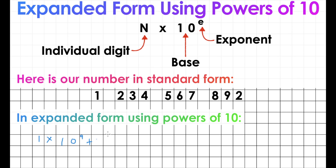To that, we're going to add our next one. 2 is in the hundred millions place, so we're going to write 2 multiplied by 10. Our exponent is now the number of digits after the 2: 1,2,3,4,5,6,7,8 — so our exponent here is 8. To this we're going to add: plus our next number is 3, so 3 times 10. We count the number of digits after the 3: 1,2,3,4,5,6,7 — so our exponent is 7. Plus, next number is 4 in the millions position, so we'll write 4 times 10. The number of digits after the 4: 3,4,5,6 — so it's to the power of 6.